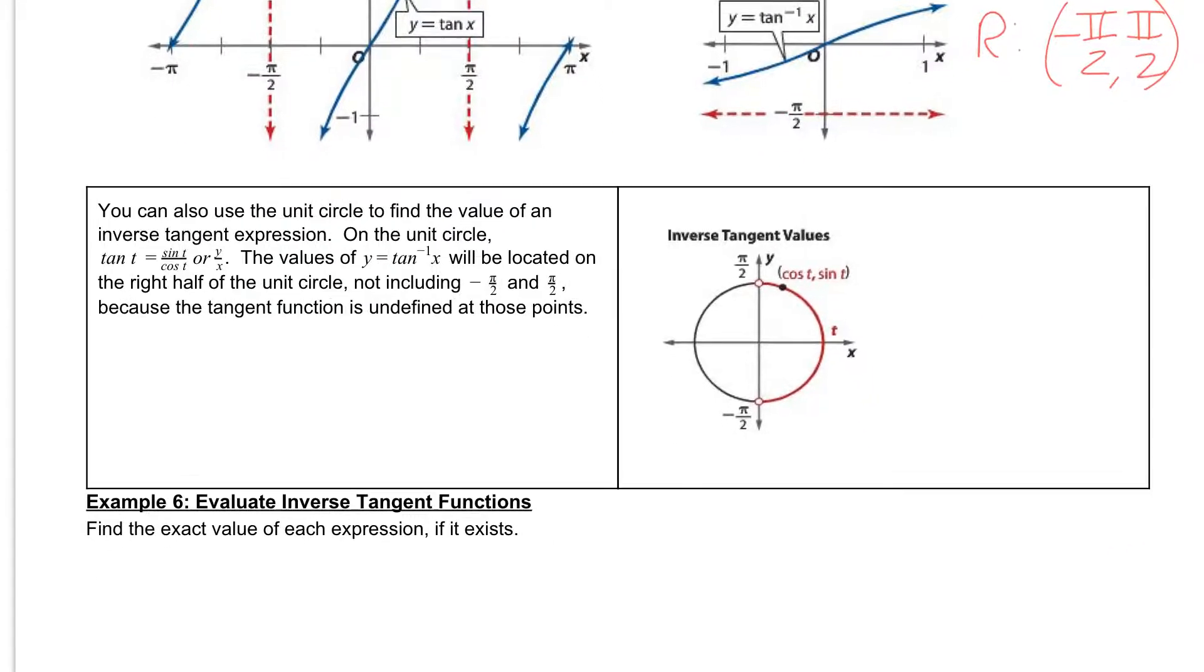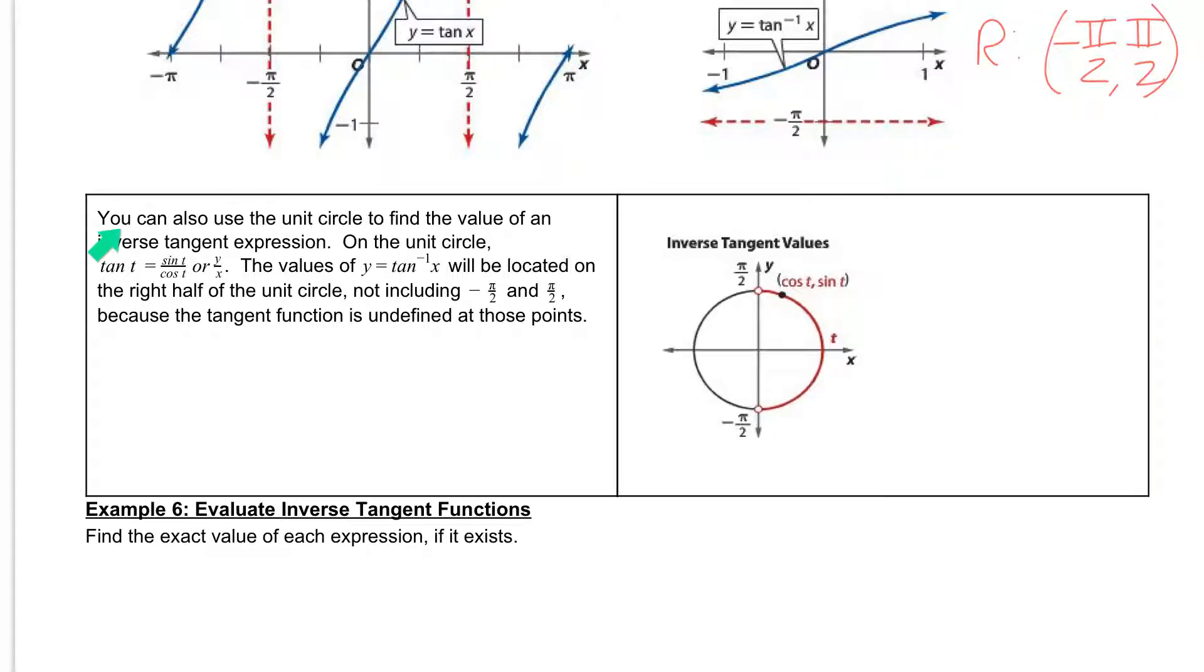Then if we scroll down to the box below, it says you can also use the unit circle to find the value of an inverse tangent expression. On the unit circle, tangent of t is the sine of t divided by the cosine of t, or you can think about it as y divided by x. The values of the inverse tan will be located on the right half of the unit circle, just like your sine function. But it does not include negative pi over 2 and pi over 2, because the tangent function is undefined at those points.